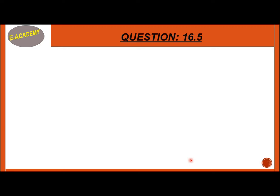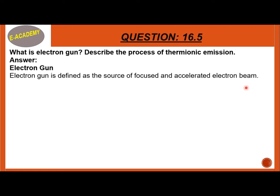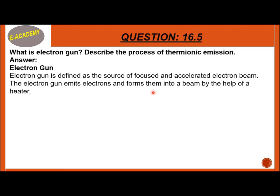Question 16.5: What is an electron gun? Describe the process of thermionic emission. An electron gun is defined as a source of focused and accelerated electron beam. The electron gun emits electrons and forms them into a beam by the help of a heater, cathode, grid, pre-accelerating, accelerating, and focusing anode.